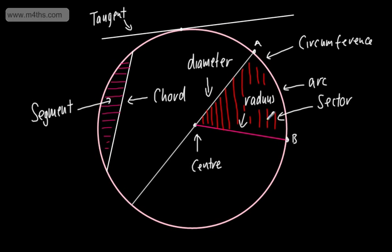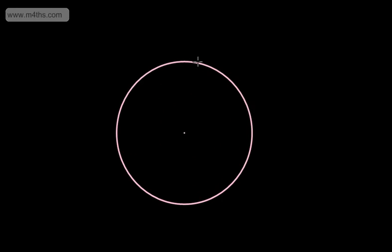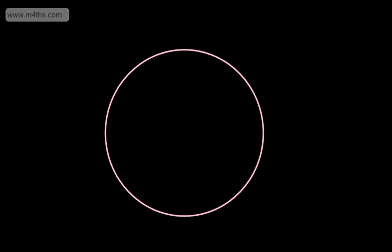Those are the main pieces of information we need to know about the circle — some key facts to remember. What we're now going to do is go on and look at the area of the circle. The area is the space trapped inside. The formula that students seem to forget is that the area is equal to pi multiplied by R squared, where R is the radius.